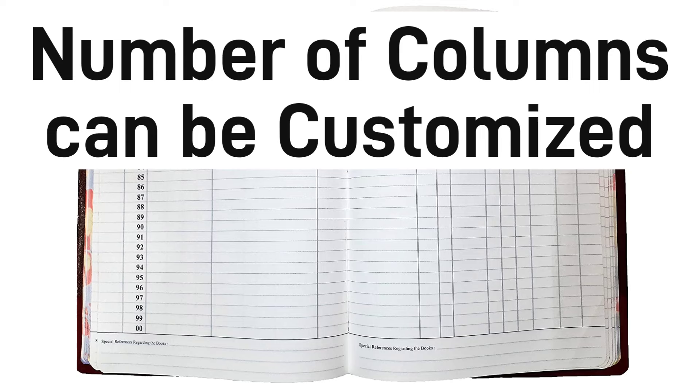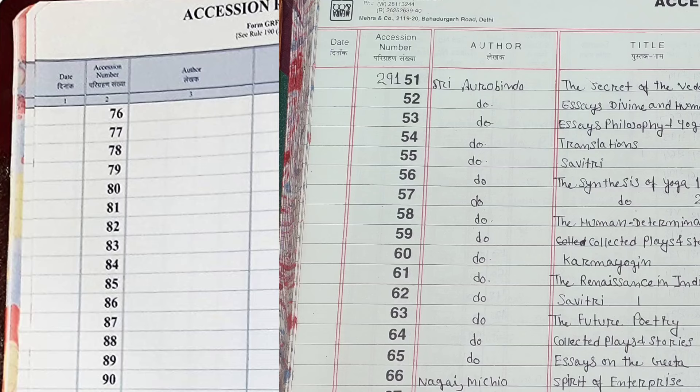You might have also seen registers with 17 or 16 columns. The very first column is the date. You need to enter the date when you are writing the details of that particular book in the register. When you place an order for books, you receive them along with a bill. Either you can use the date mentioned in that bill to enter all the books from that invoice, or you can use a later date when you are actually entering them — both are completely fine.